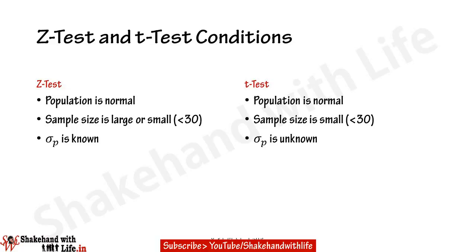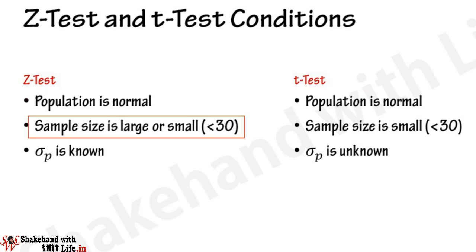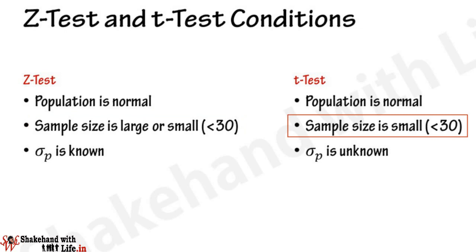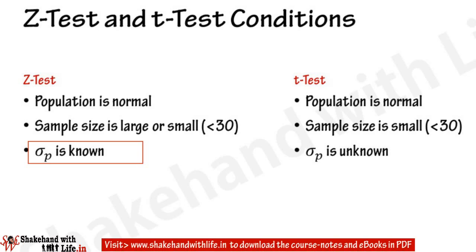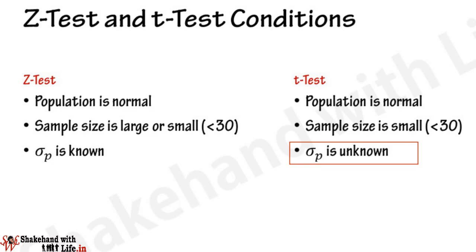If you compare the Z-test and T-test conditions for testing a null hypothesis for a given value of population mean, you will find that the population is normal in both cases. The sample size may be large or small for Z-test, but for T-test the sample size is small, that is less than 30. For the population standard deviation: in Z-test, sigma-p is known, but in T-test, sigma-p is unknown.